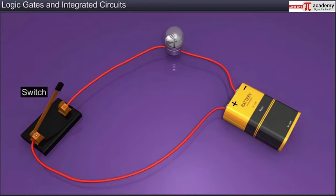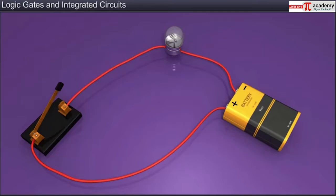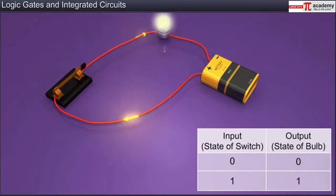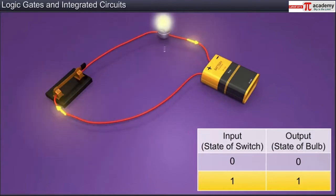The state of the switch is the input that determines the state of the bulb, which represents the output. An open switch represents an input of zero; the bulb remains off in this condition and represents an output of zero. A closed switch represents an input of one; the bulb lights up in this condition and represents an output of one.